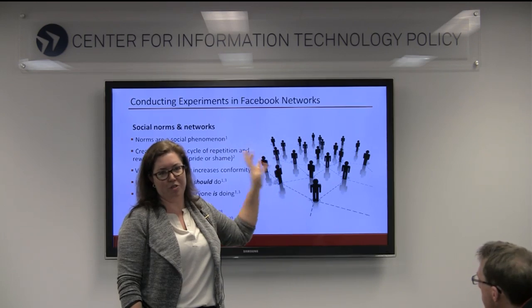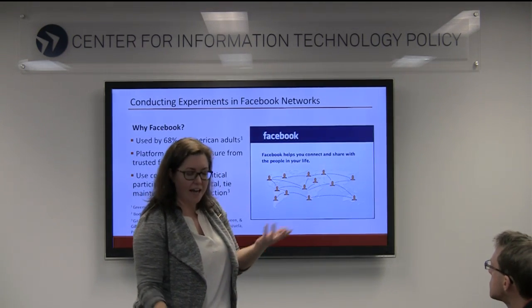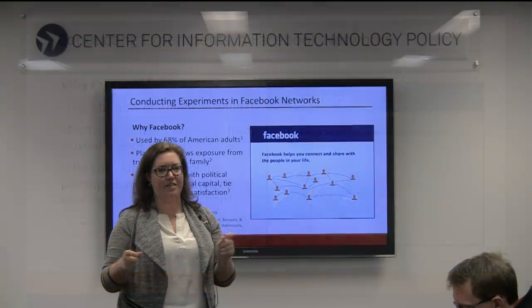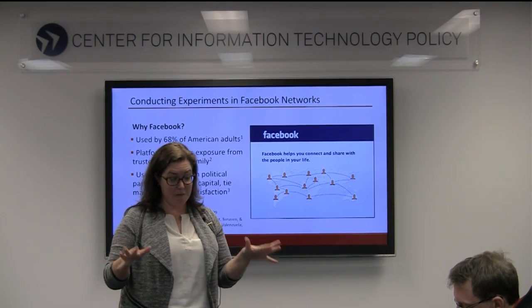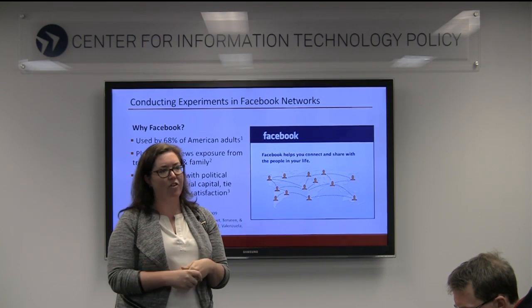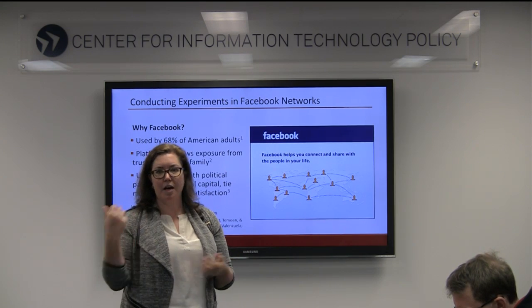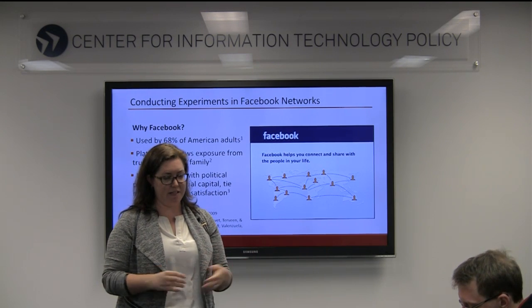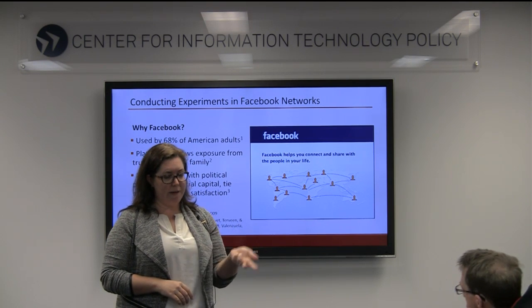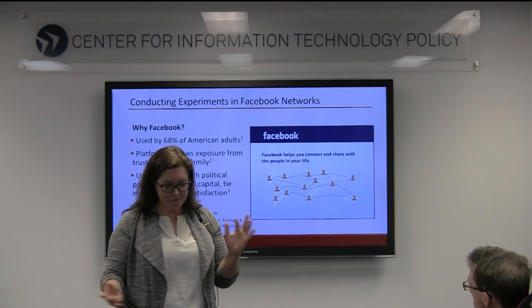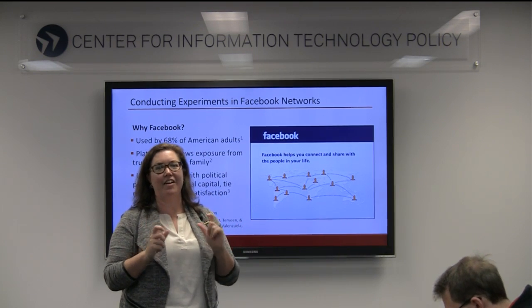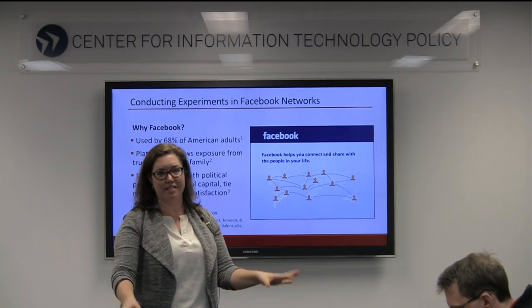So how might these social norms function in Facebook networks? Why Facebook? It's the dominant social networking platform in America, with 191 million monthly users — that's 68% of all American adults, not just online adults. We know from survey research that the platform is an effective source of news exposure, especially when coming from people in our networks that we trust, like friends and family. Facebook use is statistically related to increases in political participation, social capital, maintaining relationships, and even overall life satisfaction. What I want to do with these experiments is try to figure out how to actually use Facebook as a mechanism to increase some of these outcomes.